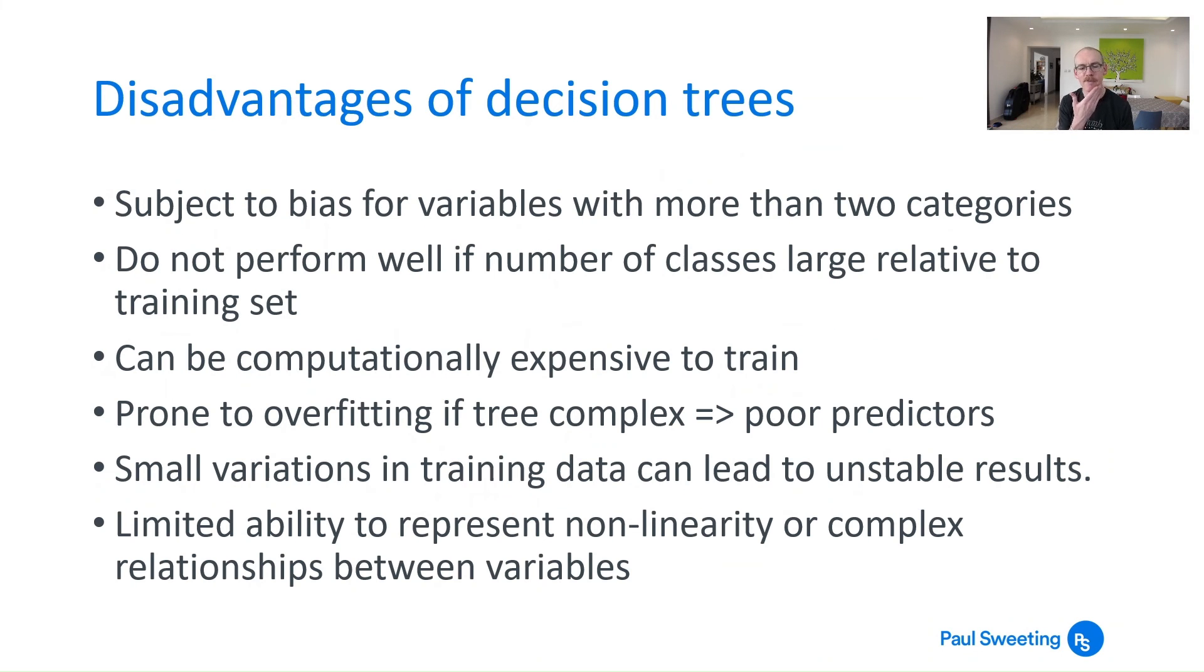But there are some disadvantages as well. I mean if you've got more than two categories then you do potentially have some bias problems. And if you've got a large number of classes relative to the training set it doesn't work very well. It can also get quite computationally expensive to train the tree. If you're having to run through a large number of categories to try to calculate the entropy for every possible point in each of those sub-data sets, that can get quite tricky.